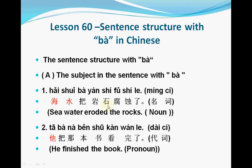For example: 海水把岩石腐蚀了. 海水 means sea water. 把 means make. 岩石 means rocks. 腐蚀 means erode. In this sentence, 海水 is the subject — it is a noun. We can see that 海水 makes the action erode.